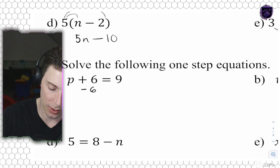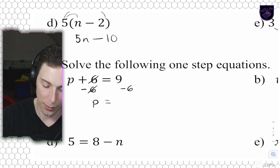So first, isolate the variable. What's happening? It's adding 6. We're going to subtract 6. We want to subtract 6 on both sides. That changes our equation - the 6 and 6 cancel out on that side. On the opposite side we're left with 6 minus 9, so P equals 3. That's our answer.